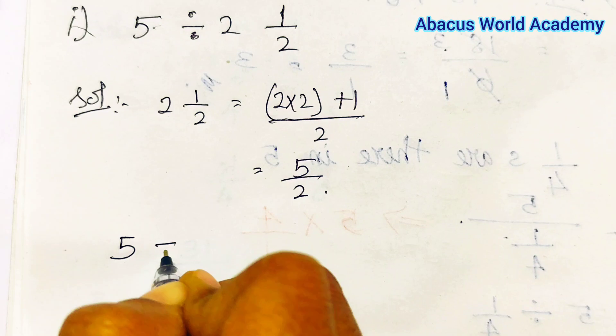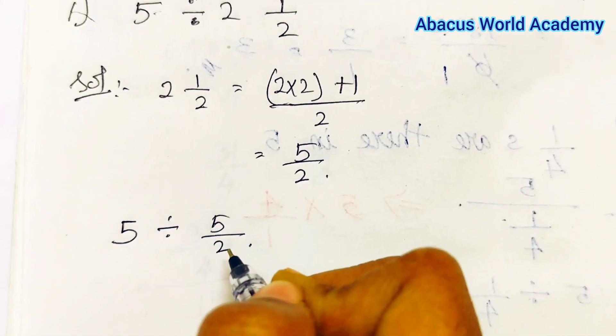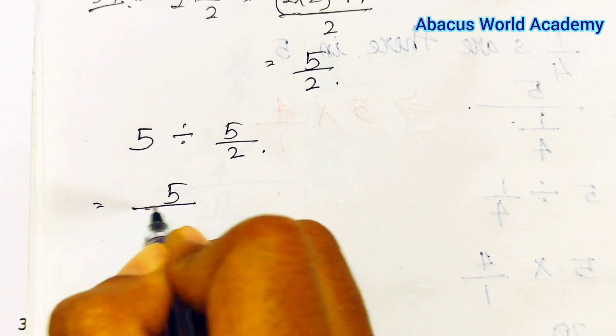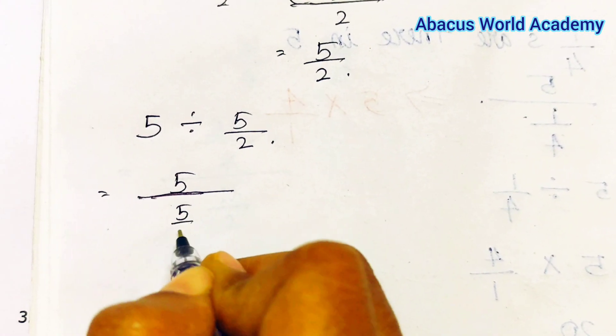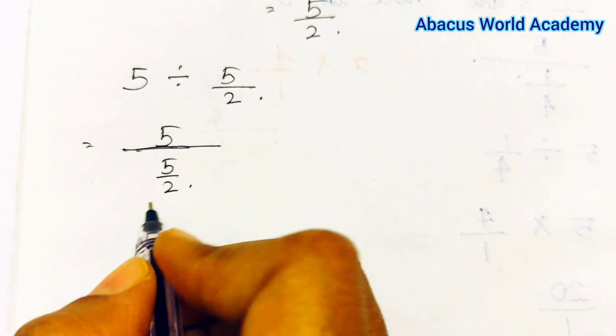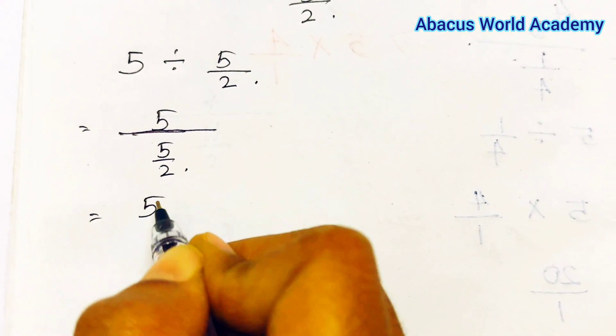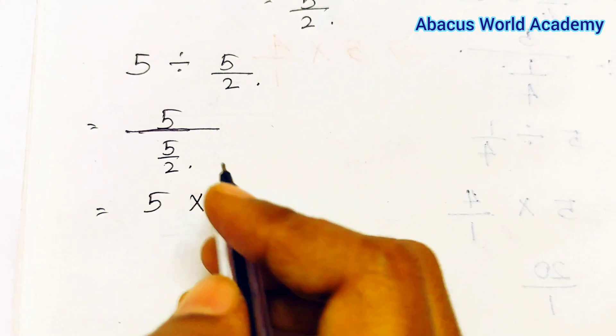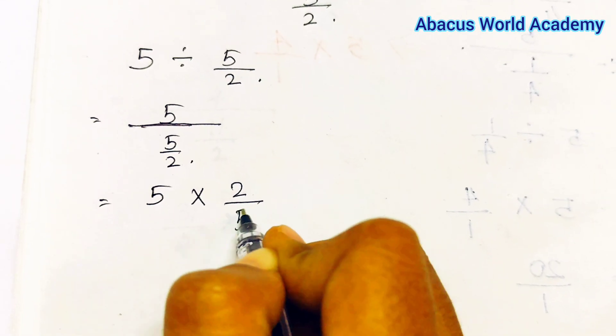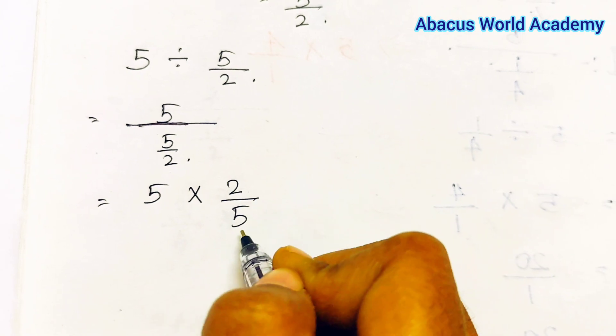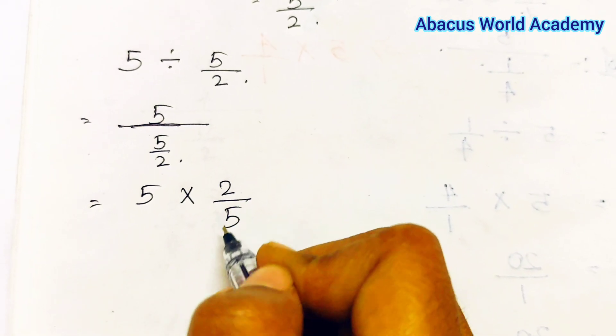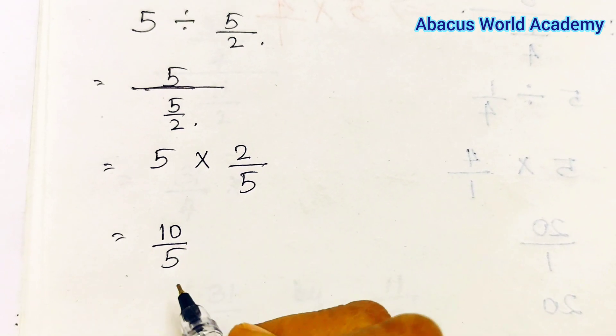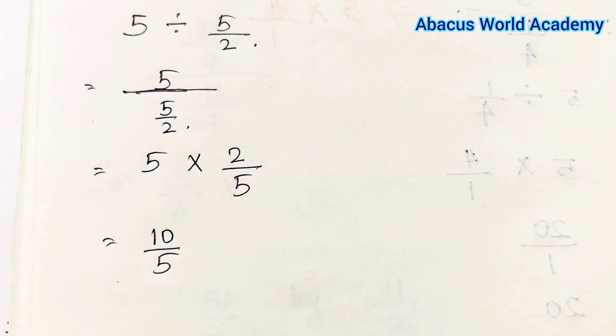So numerator by 5 by 2. In the division we have 5 divided by 5 by 2. In the division we have 5 divided by 5 into a change. This is the answer.